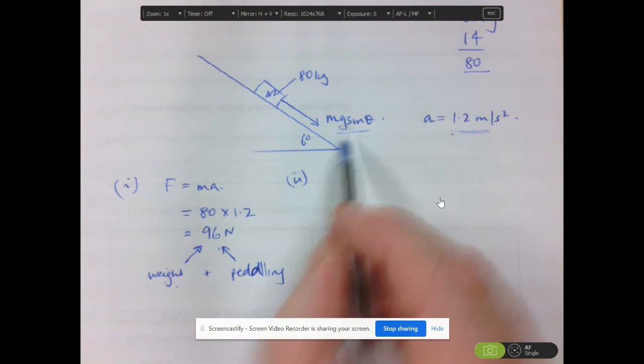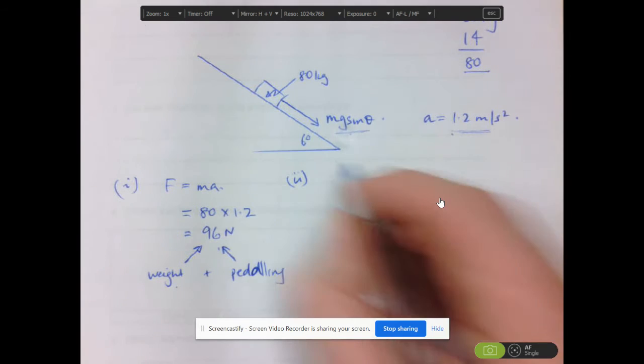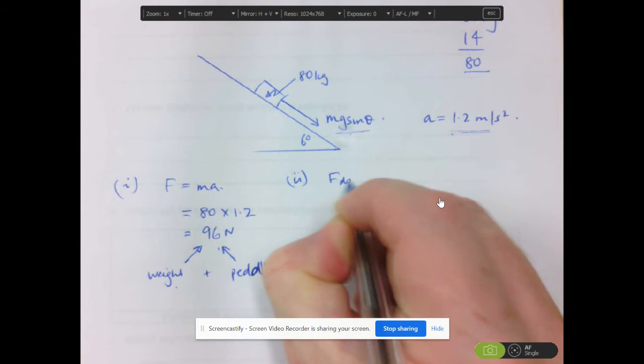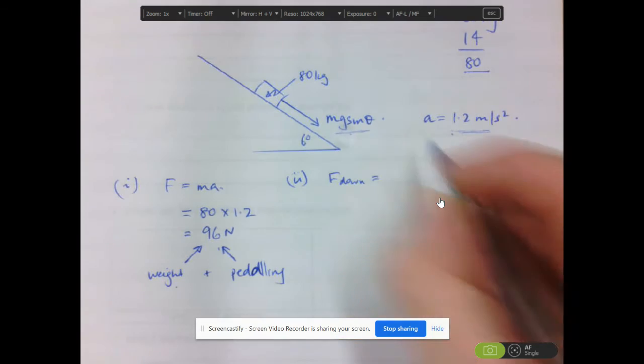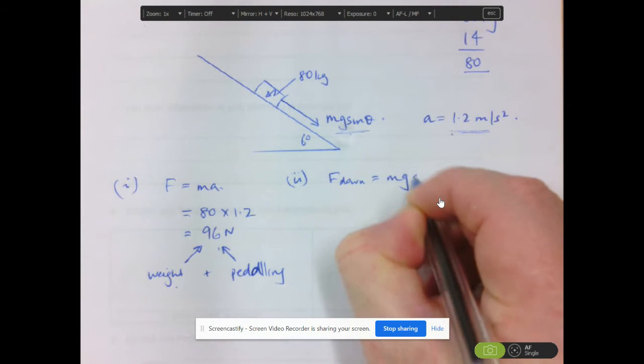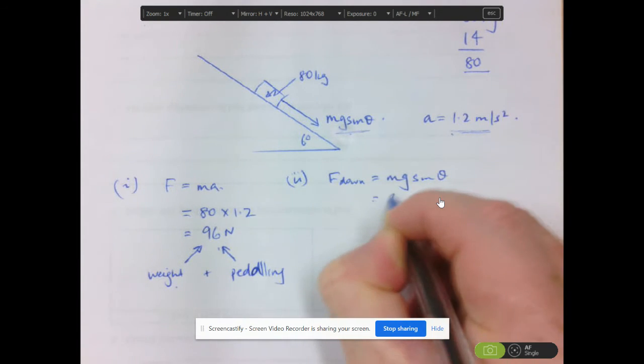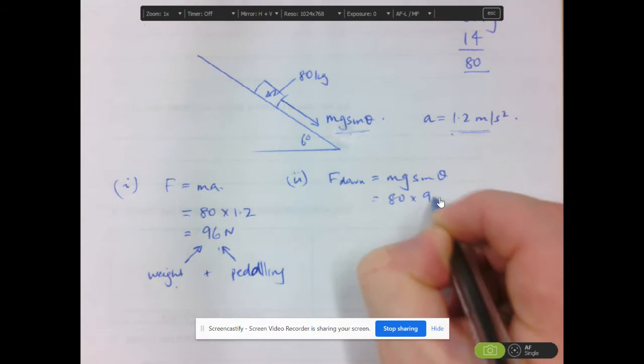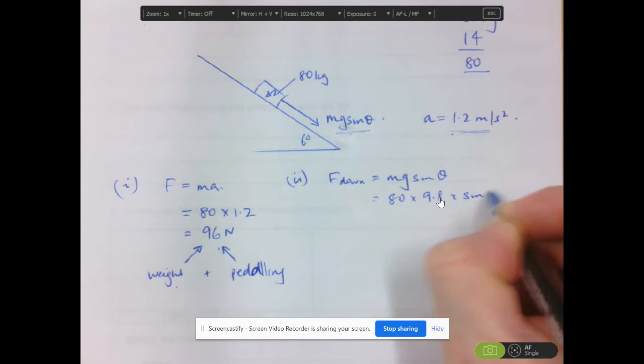So this is the weight force there. The force down the plane is mg sine theta. And that would be 80 times 9.8 times sine 6.